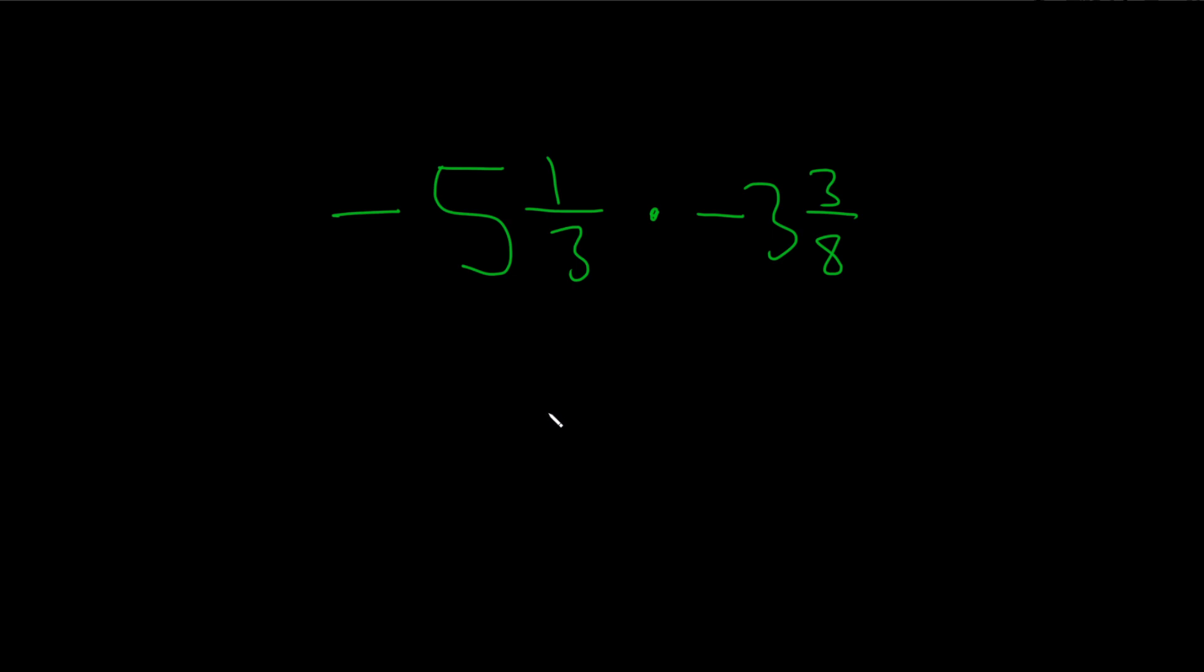So we have two mixed numbers, and they're both negative, and we have to multiply them. That's what this times means. So let's start off by converting these mixed numbers into fractions.